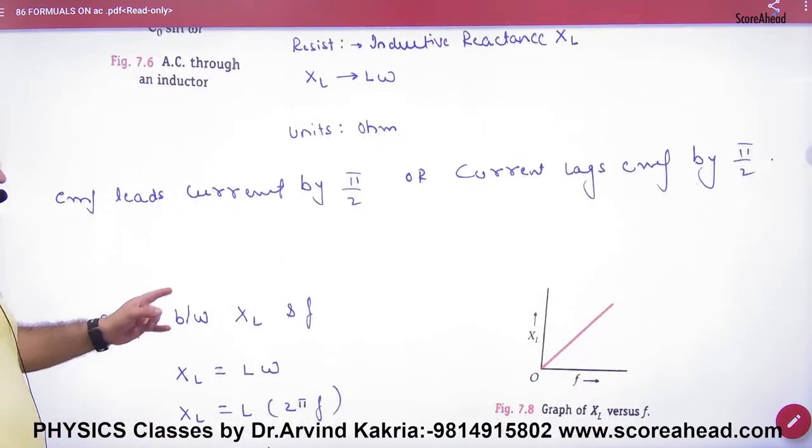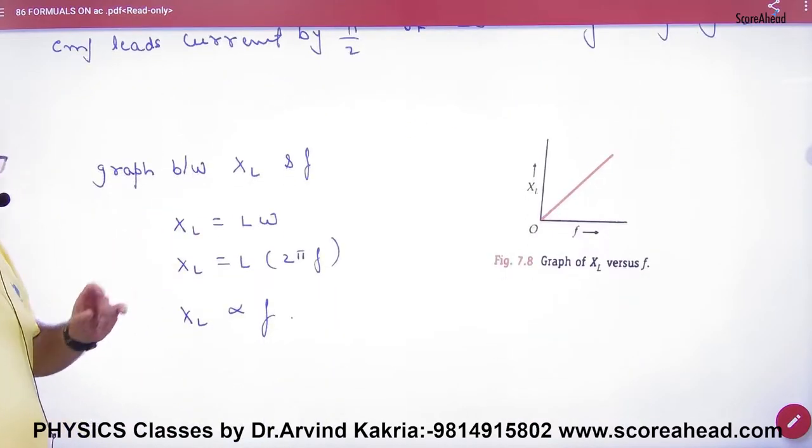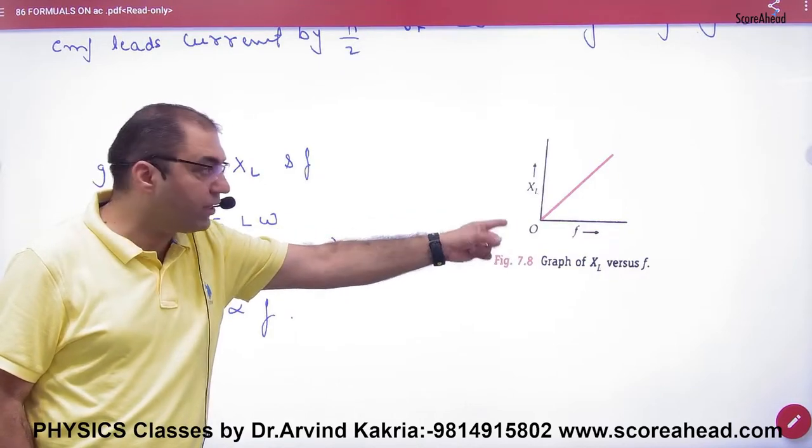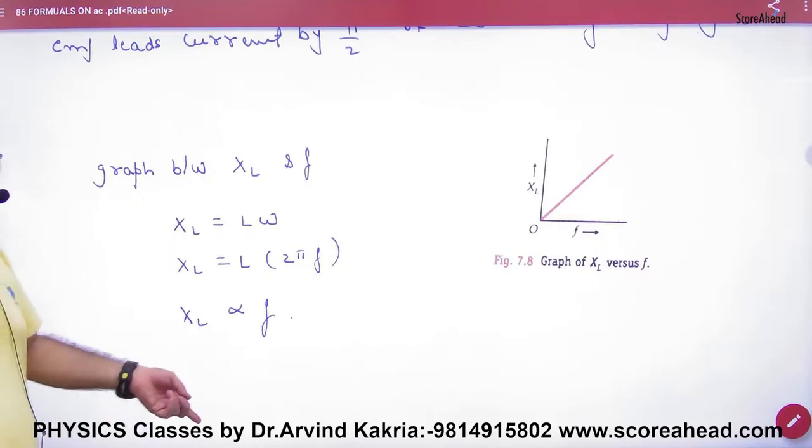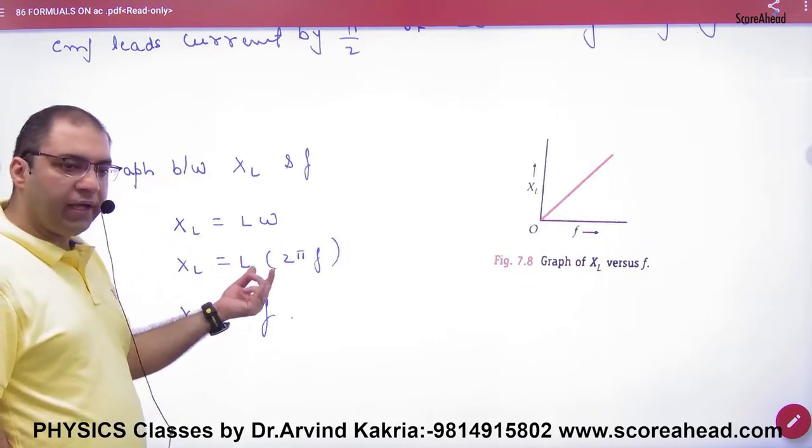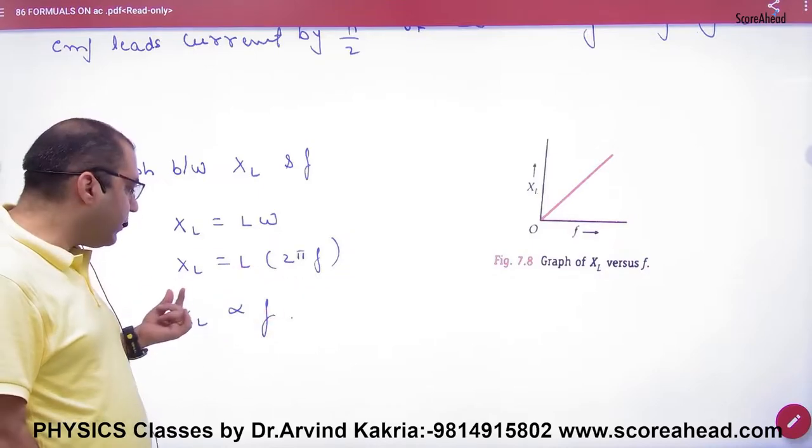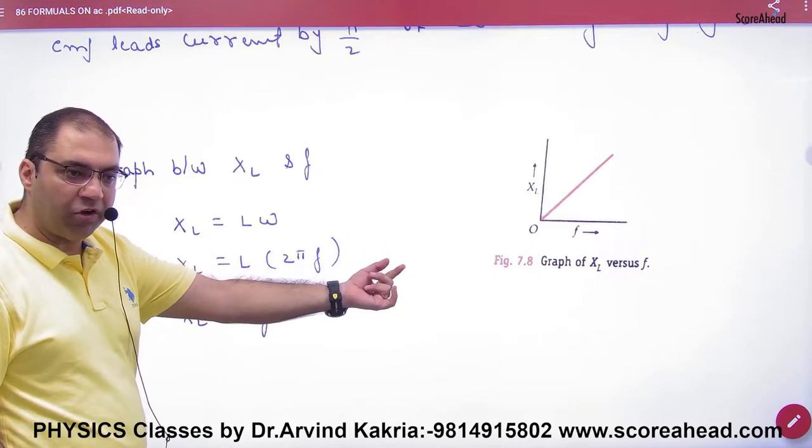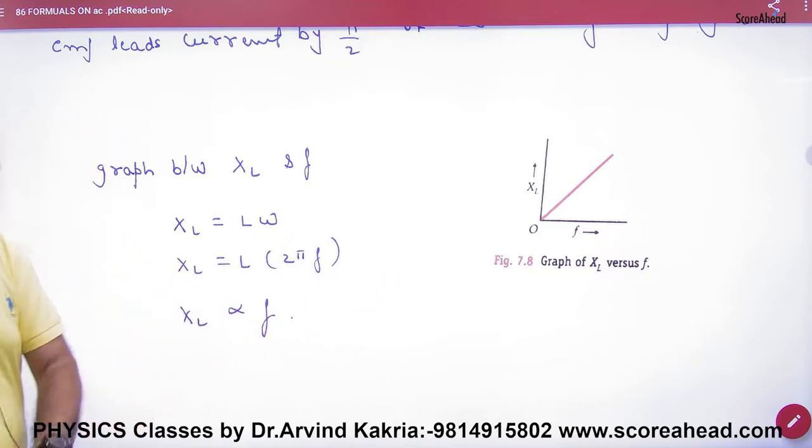And within it, the units are the ohms of XL. This is a number of NCERT in CBSE. There are a number of questions that come in CBSE. Please mark this. The graph will be XL and the frequency. XL is L omega. Omega is 2 pi frequency. So what is the value of L into 2 pi frequency? XL directly proportional to frequency. So graph is a straight line passing from origin.